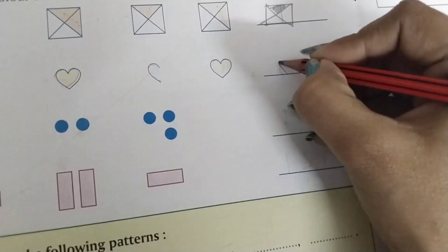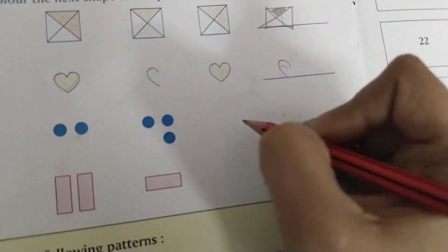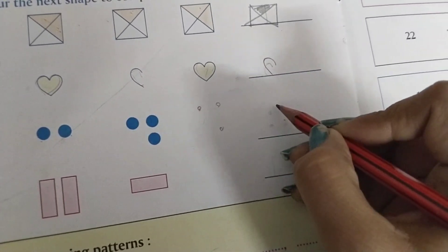One dot, two dots, three dots, now four dots, then one dot.